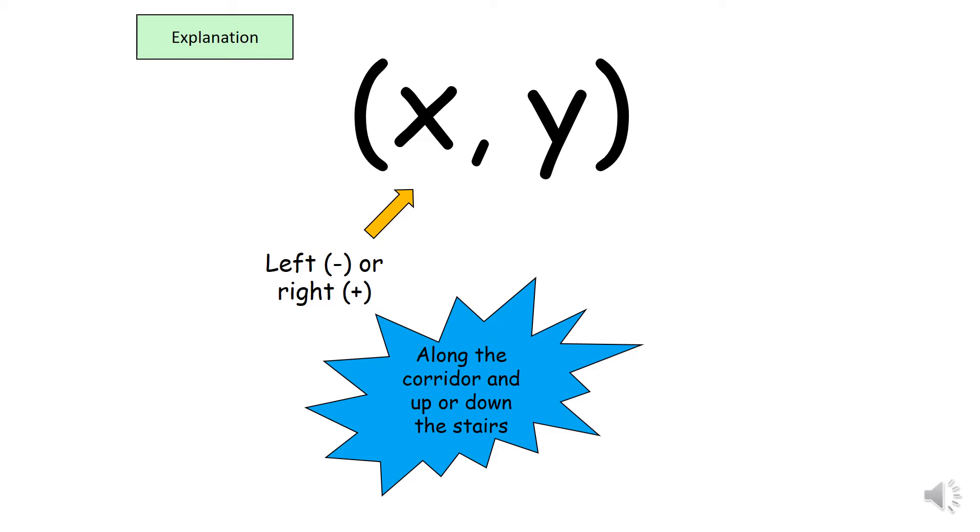So essentially, what this means is that the x-coordinates, or across the corridor, tell us whether we go left or right. Either this much left or this much to the right, and x will tell you what it is. Left will be negative x, and right will be positive.